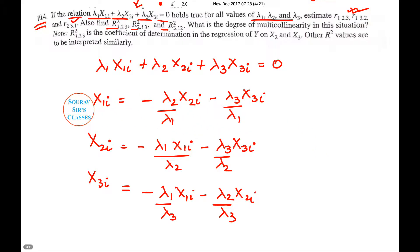Now I will substitute. So in place of -λ₂/λ₁, I am writing beta 1.2, and -λ₃/λ₁ as beta 1.3. So X₁ᵢ = β₁.₂X₂ᵢ + β₁.₃X₃ᵢ. So we will continue this.